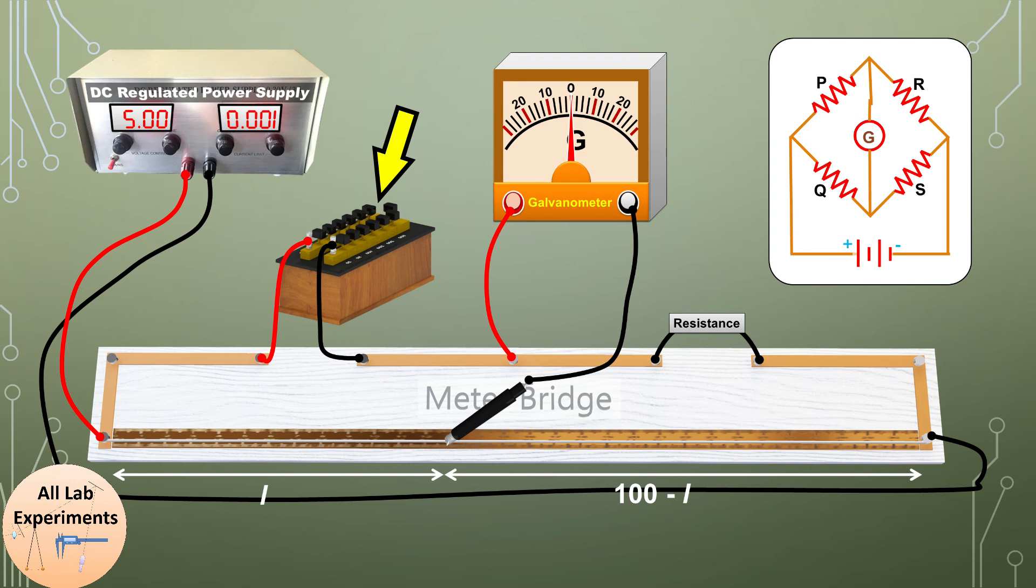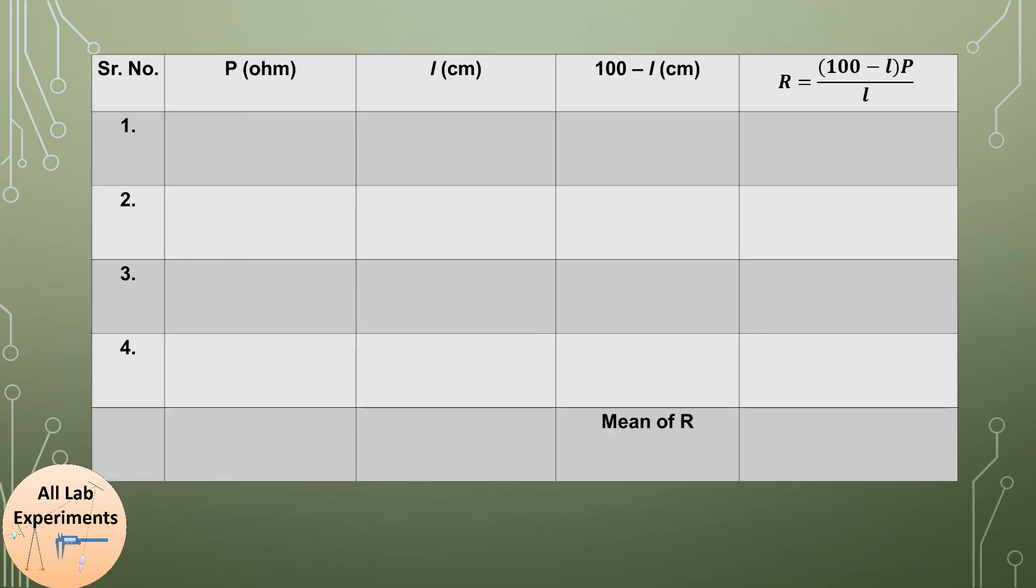So now after observing this we can again change the value of P and find out another stable point for this value of P. After that we will make a table. In first column we will write the value of P, in next column the value of L which is the length of the wire from jockey to the left terminal, and the length towards right terminal can be calculated through 100 minus L. In the last column you can calculate the value of unknown resistance.